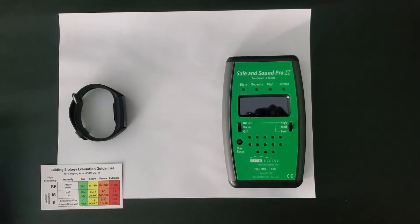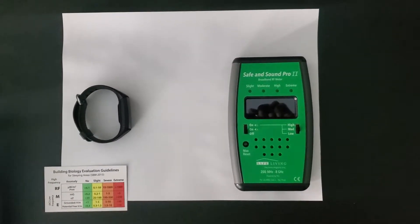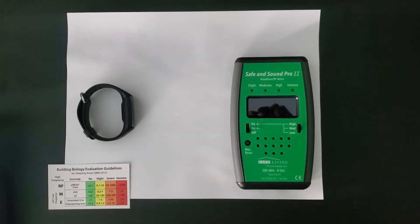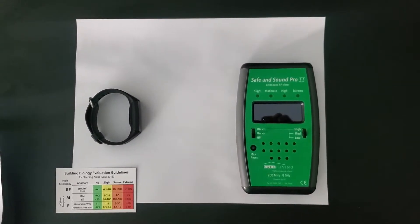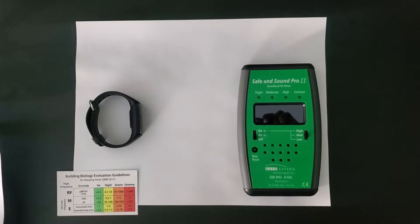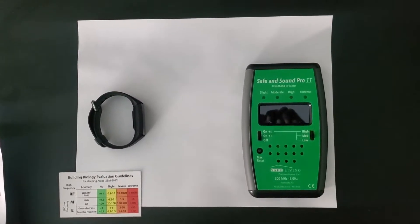Today we're going to be measuring the electromagnetic radiation emitted by a Fitbit using the Safe and Sound Pro 2 radio frequency meter which measures electromagnetic radiation. Let's turn it on.